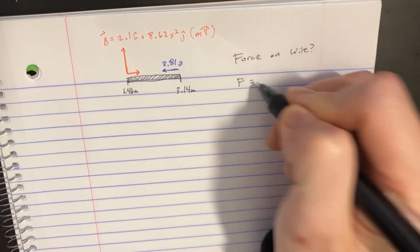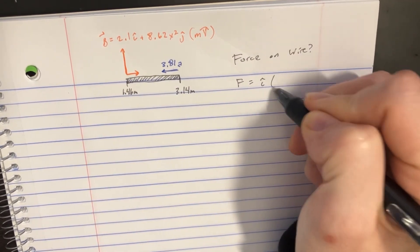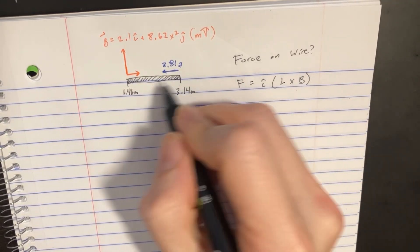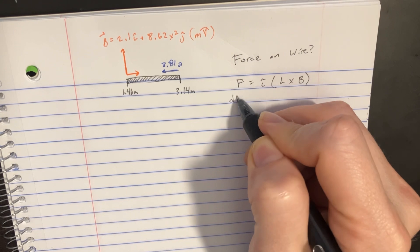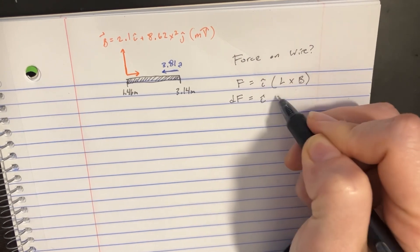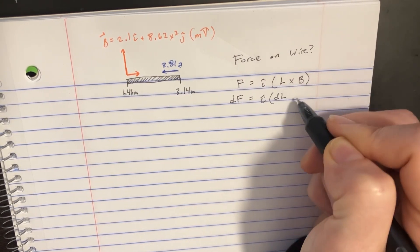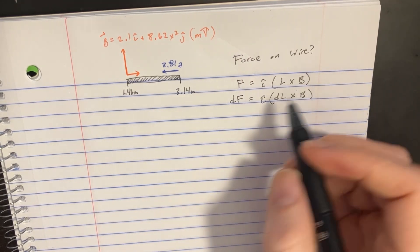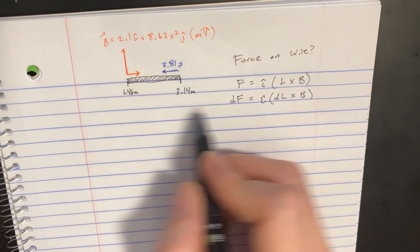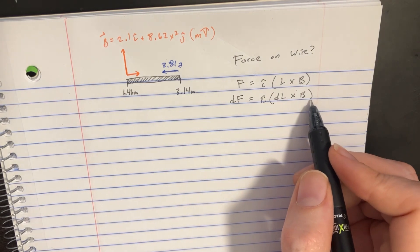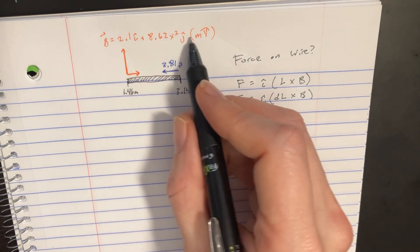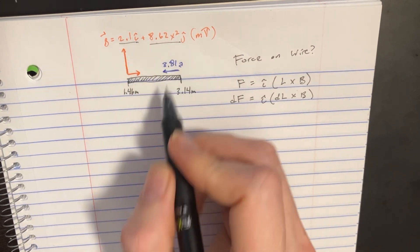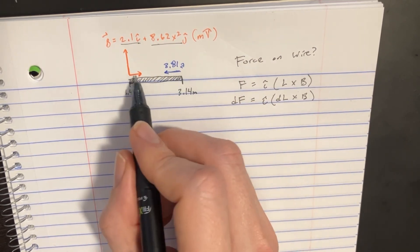To do that, we need to use the equation F = iL×B. When we take the differentials on both sides, we'll get dF = i(dL×B). Let's break this into two different differentials because we have both an x component and a y component.